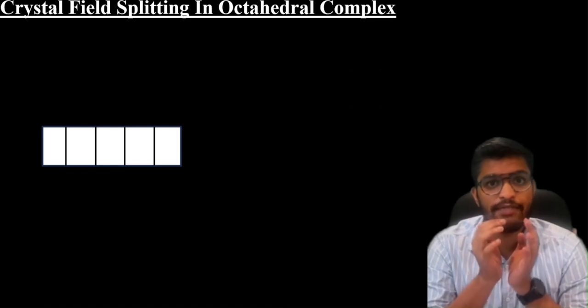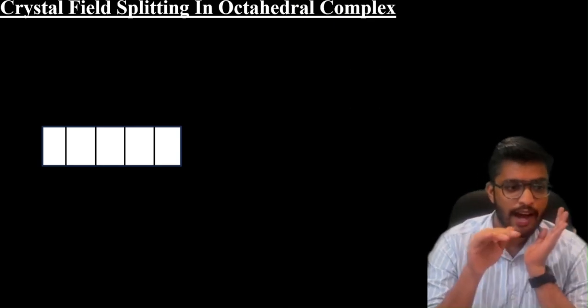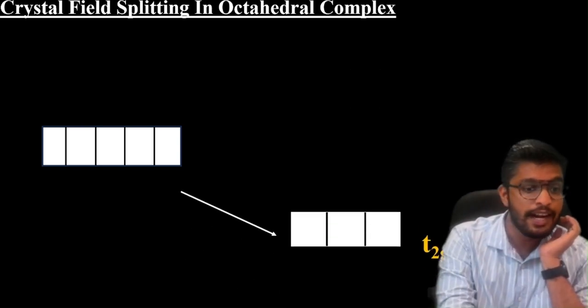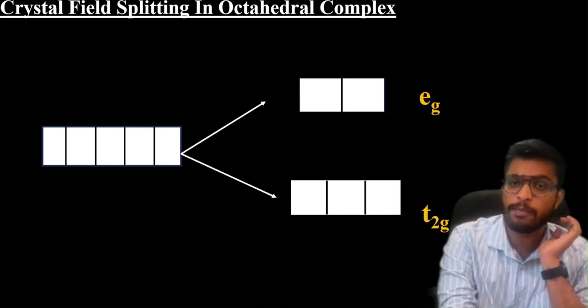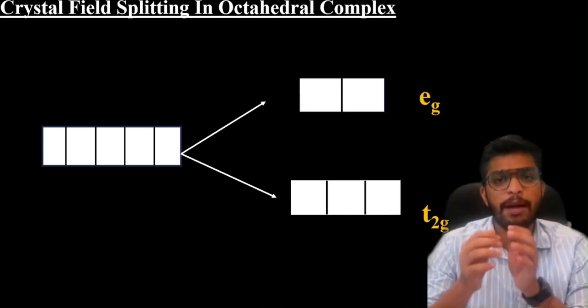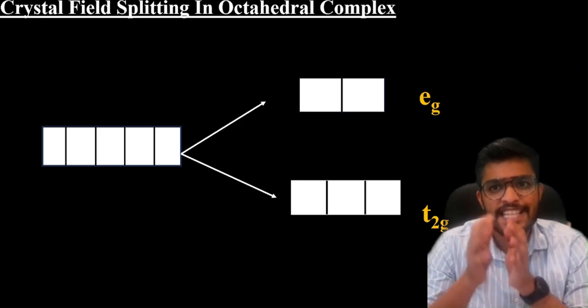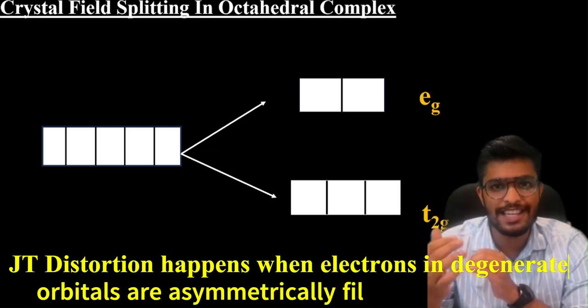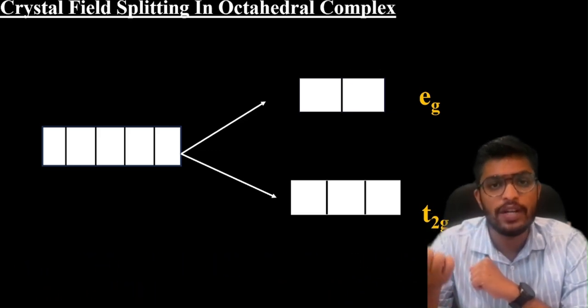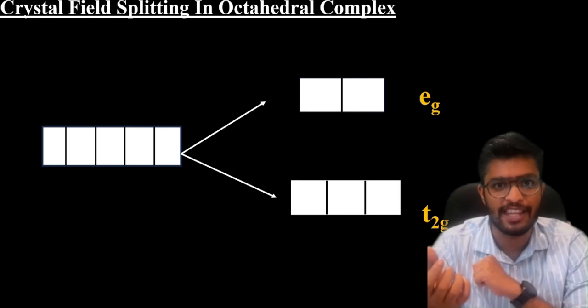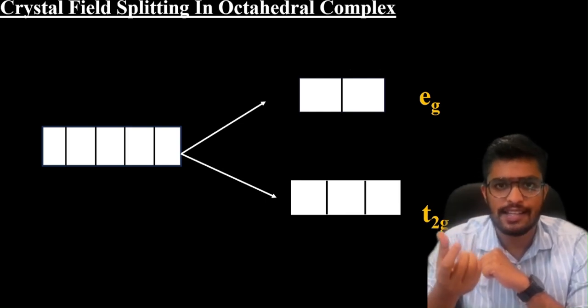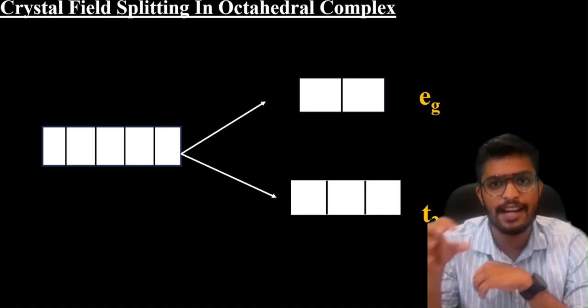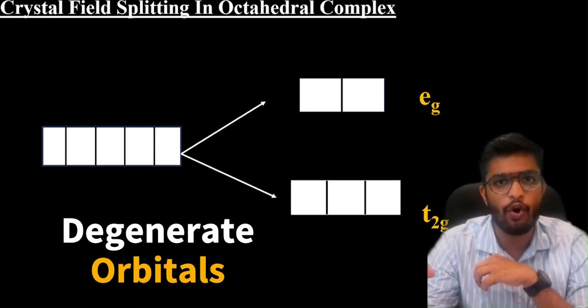Crystal field splitting in octahedral complex: degenerate orbitals split into T2G and EG orbitals. When the degenerate set of orbitals is occupied asymmetrically, that is when Jahn-Teller distortion happens. What is degeneracy? Same energy set of orbitals - that is actually degenerate orbitals.